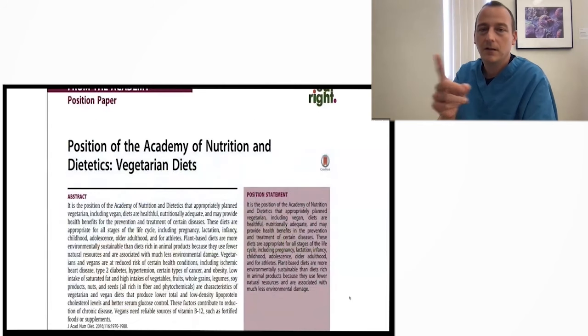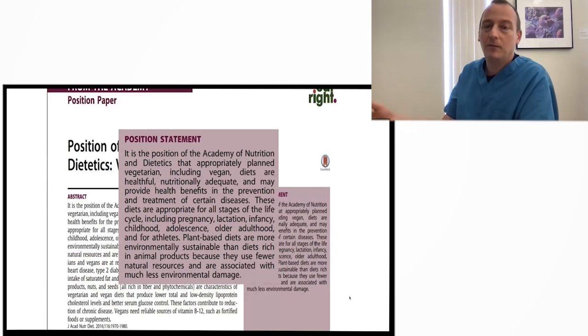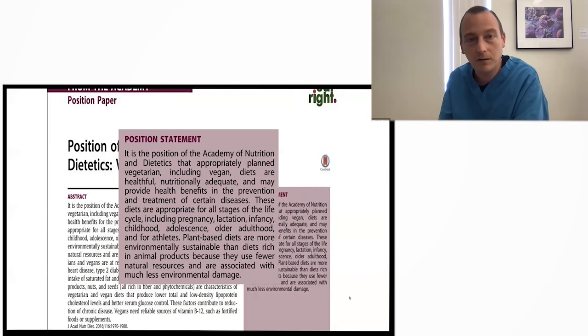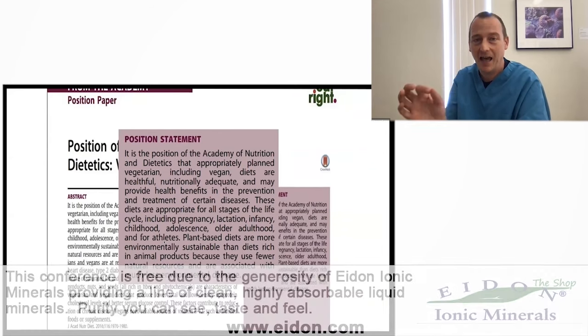If anybody ever questions you, just say that the American Academy of Nutrition and Dietetics, which is the largest nutrition organization in the world, has a statement that says appropriately planned vegan diets are healthful and nutritionally adequate for all stages of life, including pregnancy, lactation, infancy, childhood, adolescence, older adults, and athletes. All stages of life, nutritionally adequate.